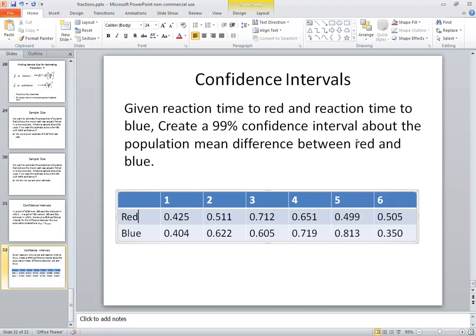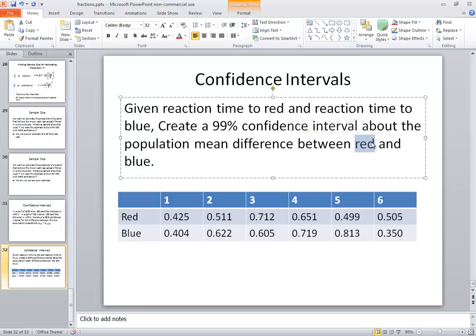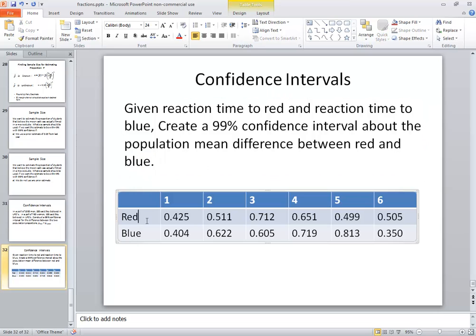Now notice between red and blue, red is first, that goes in column one, and blue is the one that goes in our second column. If they had reversed that, if they said the population mean difference between blue and red, we would put blue in the first column and red in the second column.